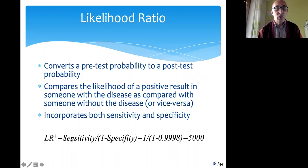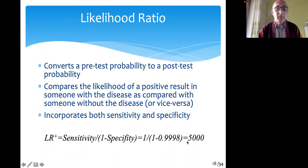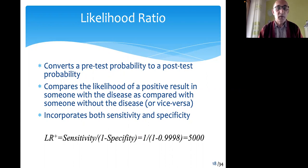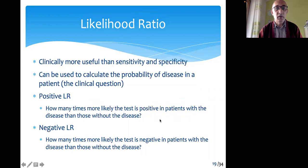The likelihood ratio formula is very straightforward: sensitivity divided by 1 minus specificity. In the creatinine phosphokinase (CPK) test example, that calculation gives a likelihood ratio of 5,000, which is a very high value.